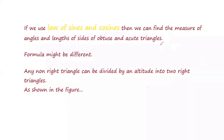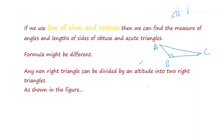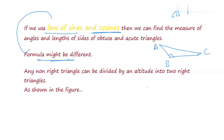Now the next question is: can we apply trigonometry in an obtuse angle triangle, where one of the angles is greater than 90 degrees? Yes, we can apply trigonometry, but in that case we have to use the Law of Sines and the Law of Cosines, which we will discuss in further videos. So we can apply trigonometry in both right angle triangles and non-right angle triangles, but the formulas may be different.